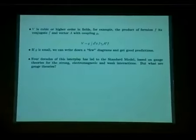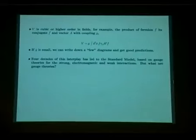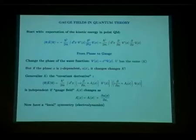Four decades of this interplay between different theories and experiments has led to the standard model. The standard model is based on gauge theories, of which quantum electrodynamics is an example. But gauge theory is not just for QED, but for the strong electromagnetic and weak interactions. What are gauge theories?